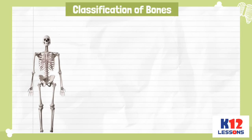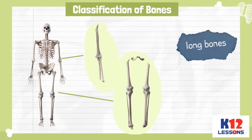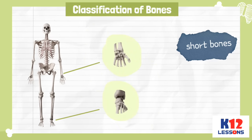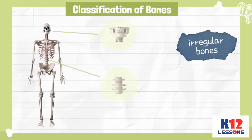Classification of bones: Long bones are found in limbs like arms and legs. Short bones are found in the wrist and ankles. Flat bones include the shoulder blades and skull. Irregular bones include the face and vertebrae.